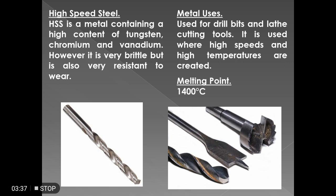Next is high speed steel. High speed steel is a metal containing a high content of tungsten, chromium, and vanadium. However, it is very brittle but also very resistant to wear. Because of this property, it is used for drill bits and lathe cutting tools. It is used where high speed and high temperature are generated. Its melting point is 1400 degrees Celsius.